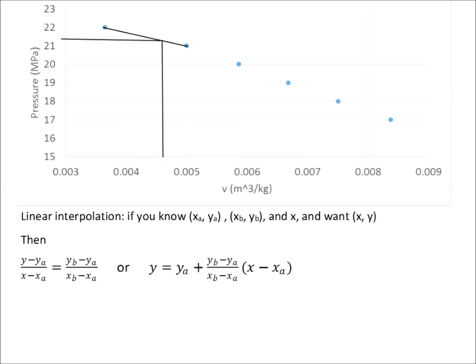So solving for Y, which is the unknown pressure in this case, you get YA plus YB minus YA over XB minus XA times X minus XA. If we plug in the values from the previous chart, then it will look like this.